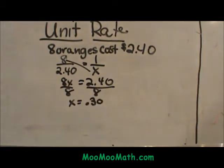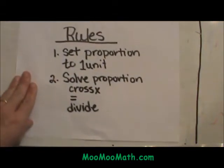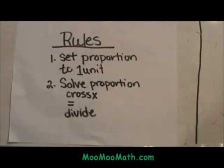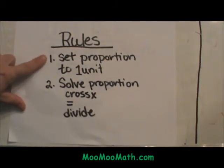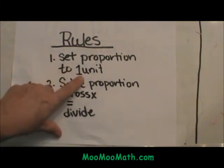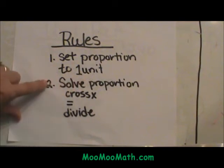Now let's slow it down and look at the rules, and we are going to re-work the problem. Here are the rules for finding a unit rate: first, we are going to set up a proportion. That proportion is going to be set equal to one unit, because you are trying to find the cost of one item. Then you are going to solve that proportion.